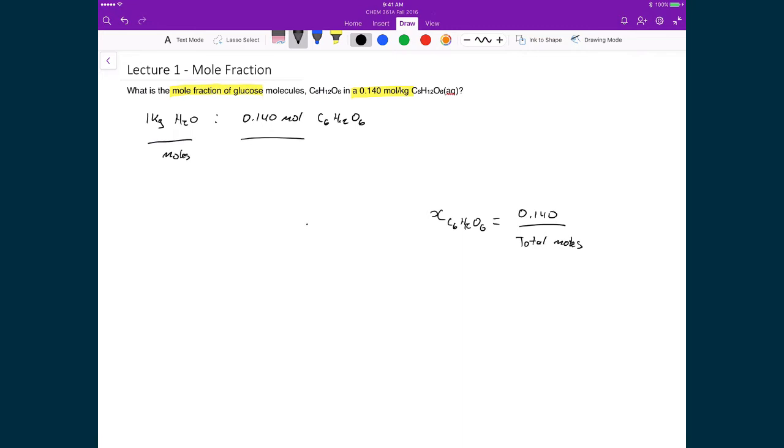So the only thing we need to calculate is total moles to be able to finish this calculation. So let's calculate the number of moles of water that we have in our system. So we know that we have 1 kilogram of water, and inside 1 kilogram of water we have 1,000 grams. We know that the molar mass of water is 18.02 grams for every 1 mole of water. And so if we do this multiplication, what we're left with is 55.49 moles of water in 1 kilogram of water.